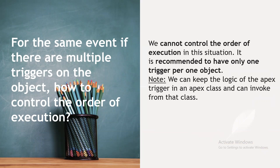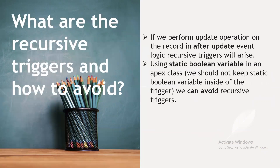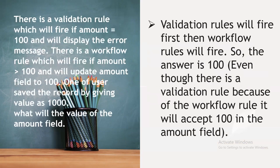What are recursive triggers and how do we avoid them? If we perform an update operation on a record in an after update event, it can cause the trigger to fire again recursively. Using a static boolean variable in the Apex class, we can avoid recursive triggers. For example: there is a validation rule that fires if amount equals 100 and displays an error message, and a workflow rule that fires if amount is greater than 100 and updates the amount field to 100.